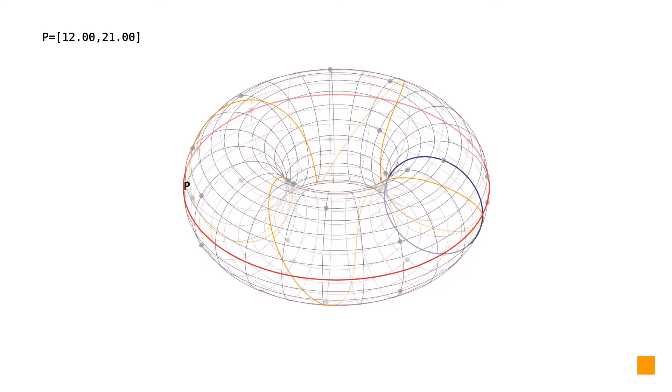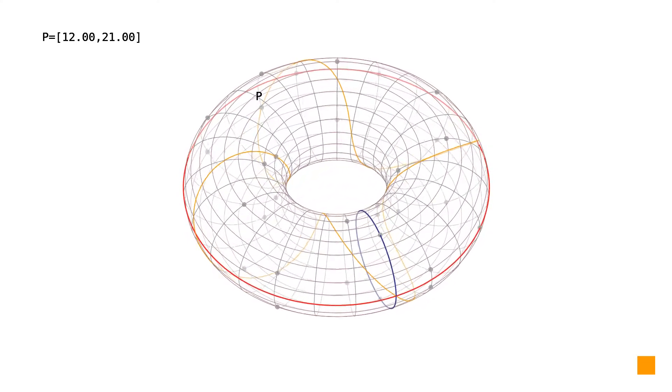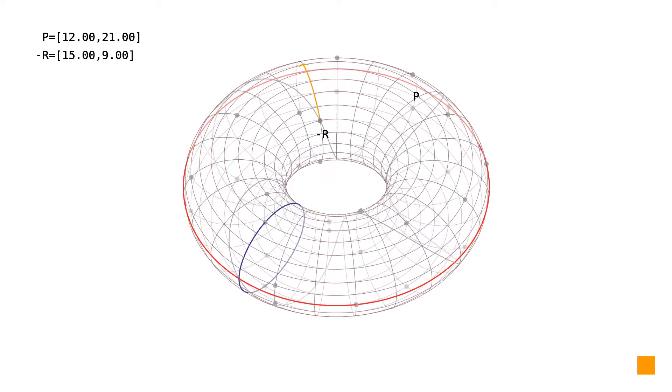This tangent line also forms a closed curve over the given finite field. Again, where this line hits another rational point of the elliptic curve, there lies the point minus R, which is the negation of the result.